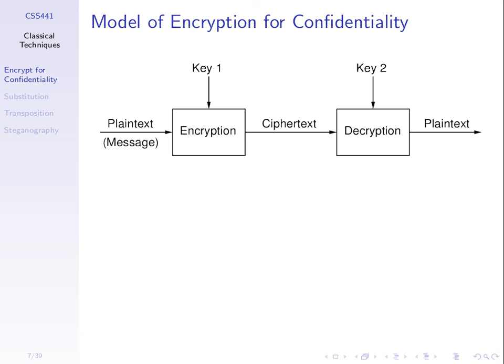There are two different approaches to encryption that differ by the keys used. The first is where both the encryptor and decryptor use the same key — key one and key two are the same value. A second approach uses different keys. If the keys are the same, we say they are symmetric. If they are different, they are asymmetric. We'll talk about both symmetric key encryption and asymmetric key encryption.